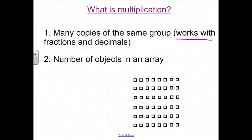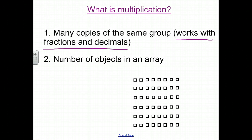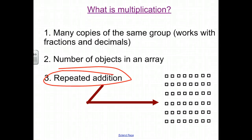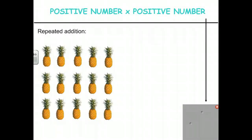A quick note: copies of the same group works with fractions and decimals too. If you have 3 times 4 ninths, it's easy to say that means 3 copies of 4 ninths — if we go a distance of 4 ninths 3 times, how far do we go? But where we really need to get to understand what multiplication means with negative numbers is that concept of repeated addition — something being added to itself many times.